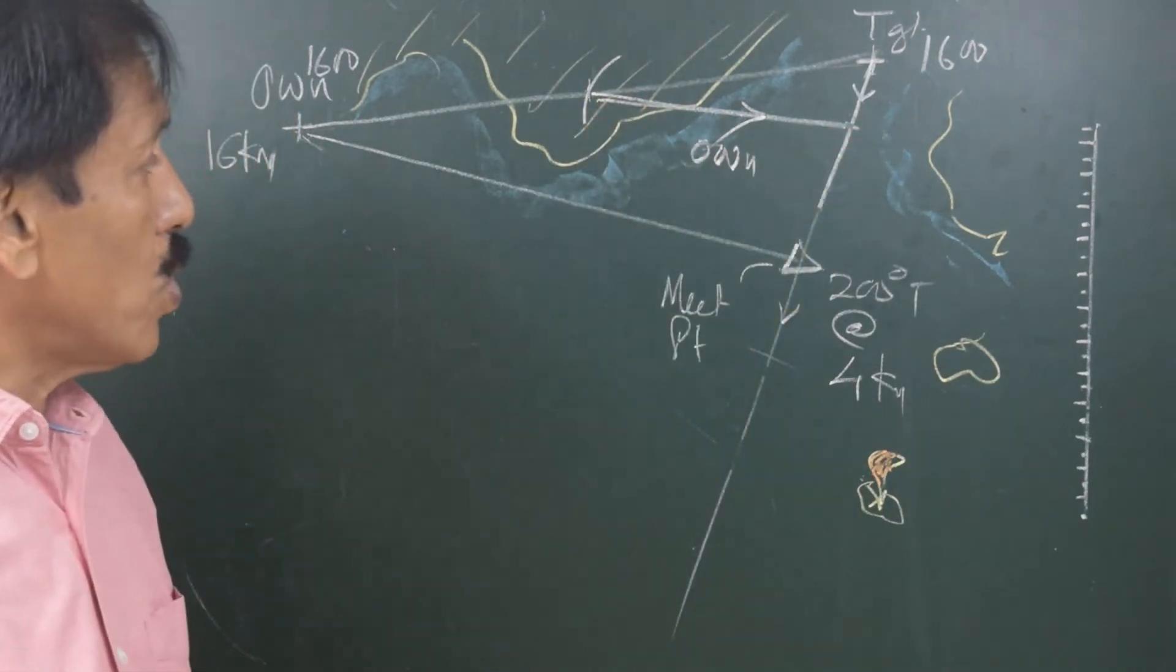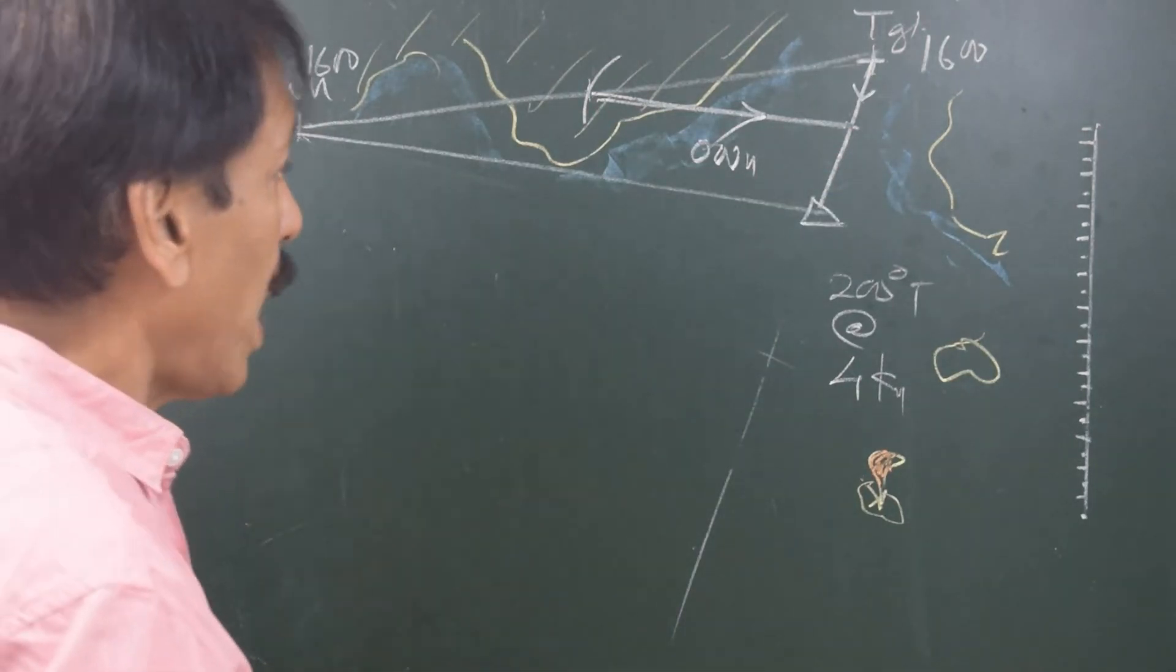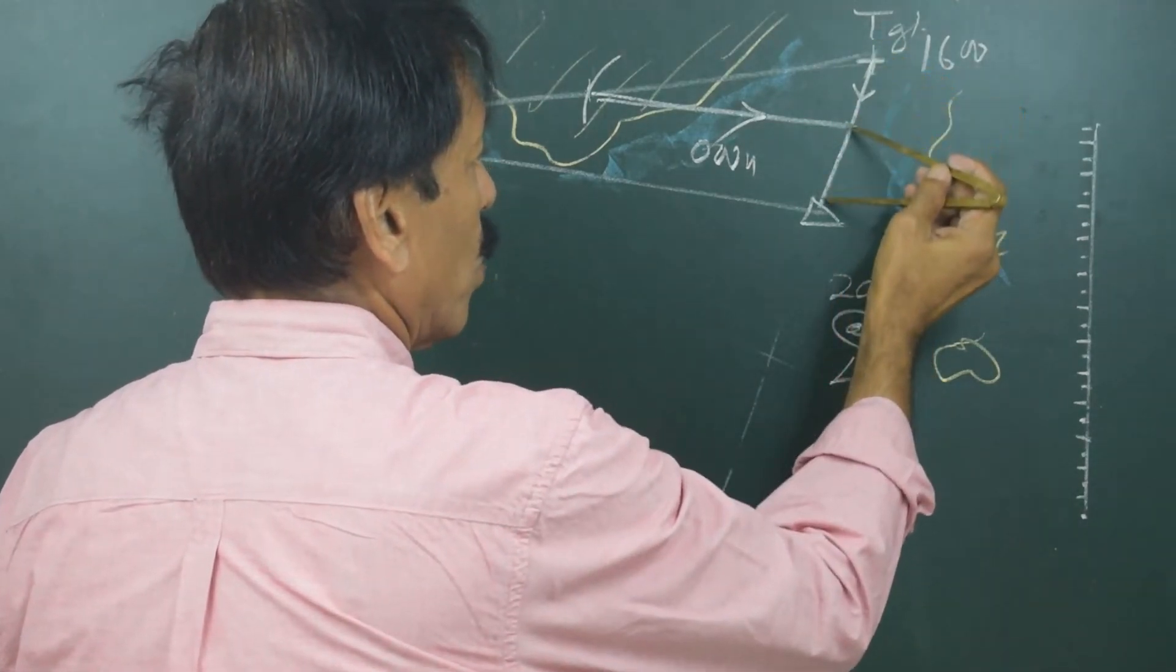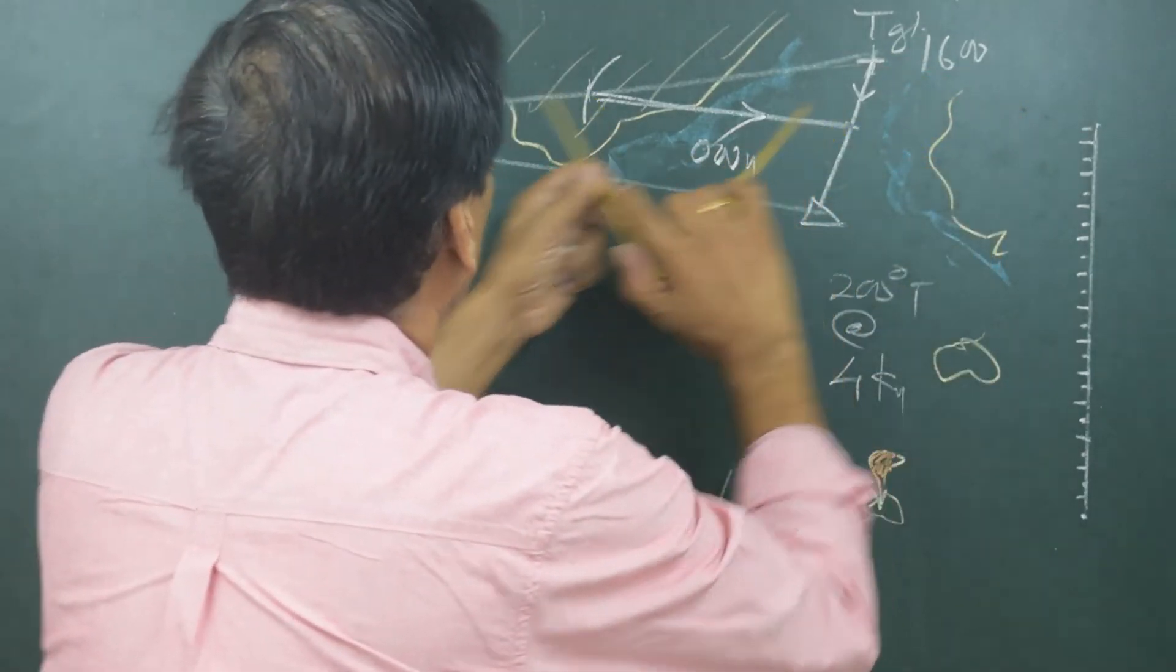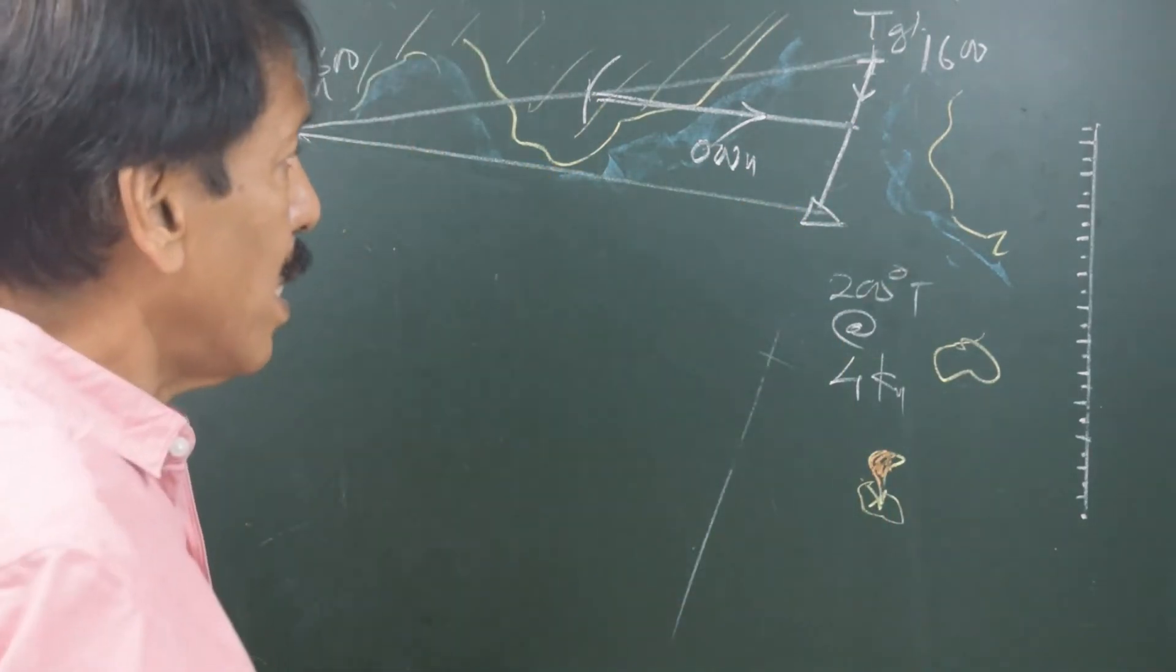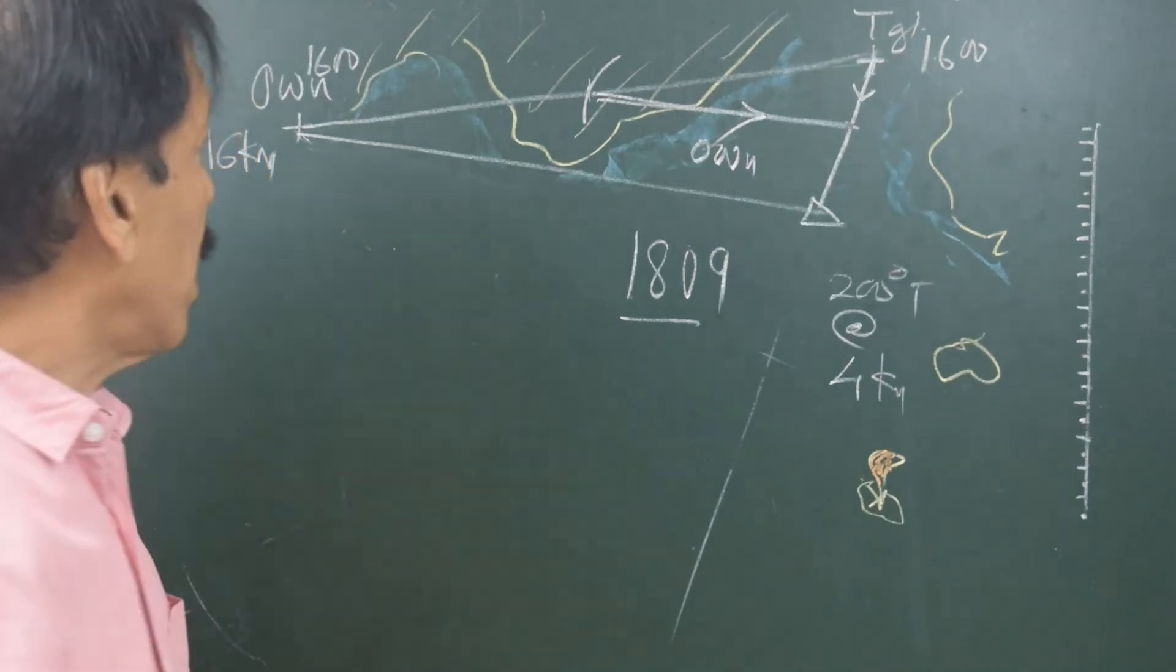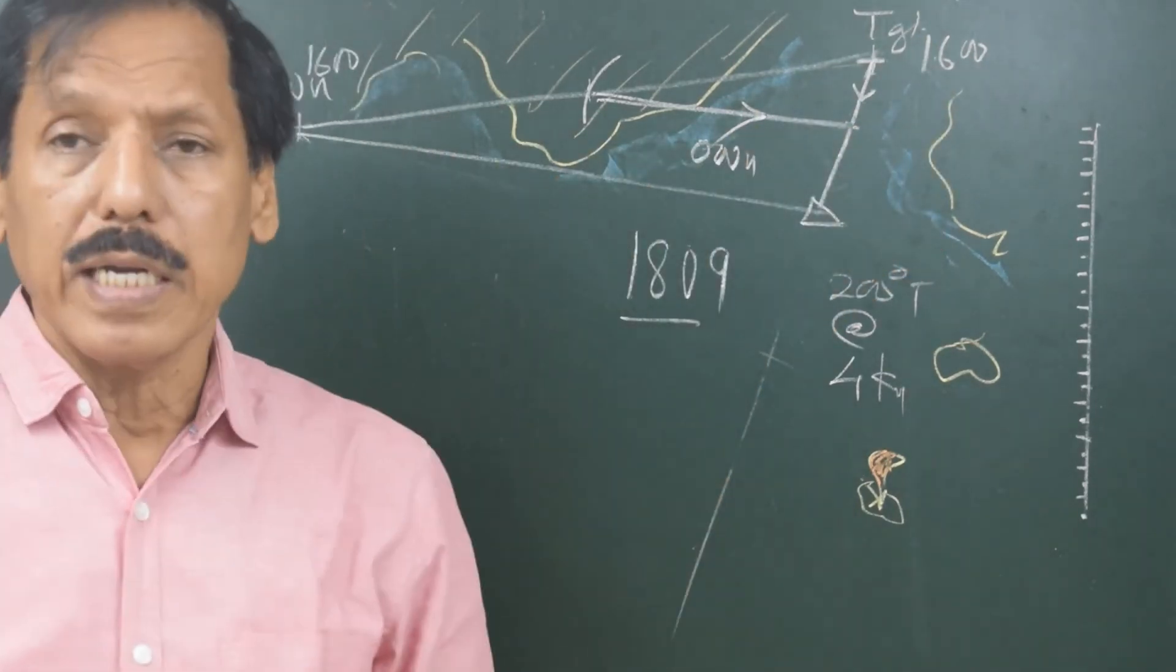But now in this rendezvous, I can find out what time we will probably meet. So if I consider that the target moves so much in 1 hour, so much in 2 hours, it is slightly over 2 hours. And if I measure on my course, it is 1 hour and then 2 hours, slightly over 2 hours. So let us say we might meet at around 1809. Starting at 1600 at the target position and known position, we meet at 1809.